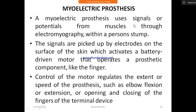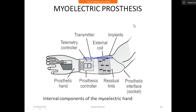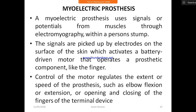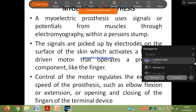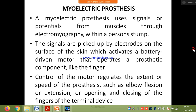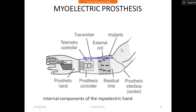With the help of that brain control, this movement will happen. Myoelectric prosthesis uses signals or potentials from muscles through electromyography within the person's stump. The signals are picked up by electrodes on the surface of the skin, which activates a battery-driven motor that operates a prosthetic component like the finger.